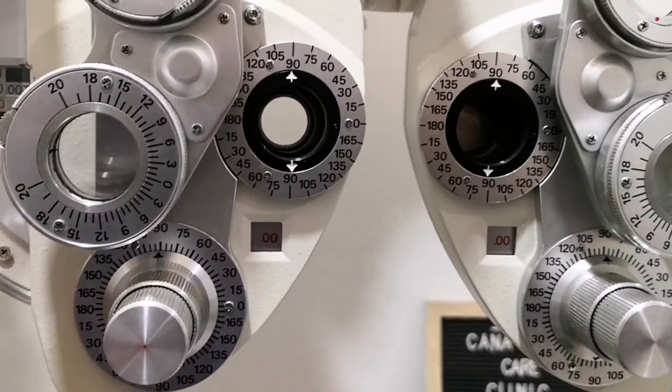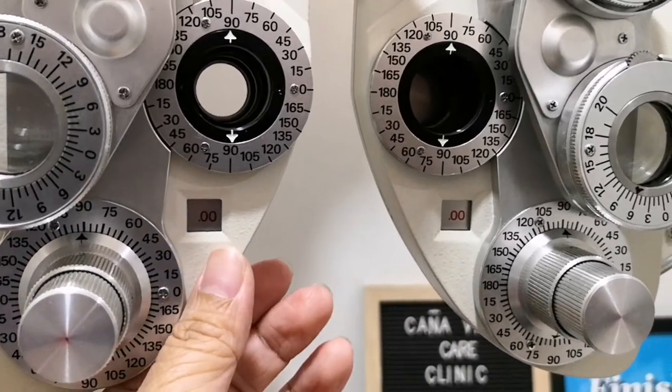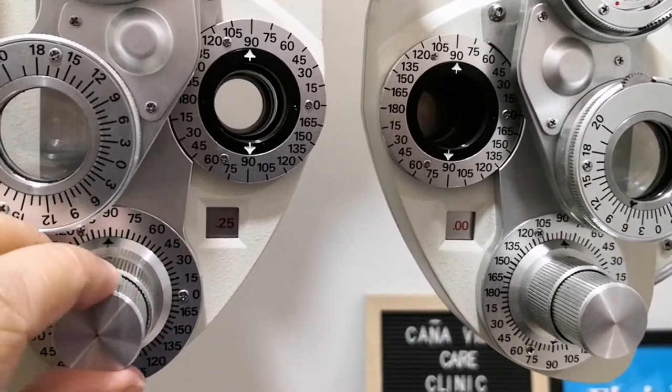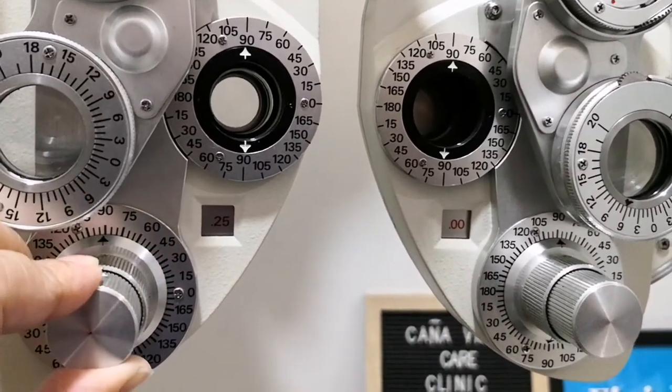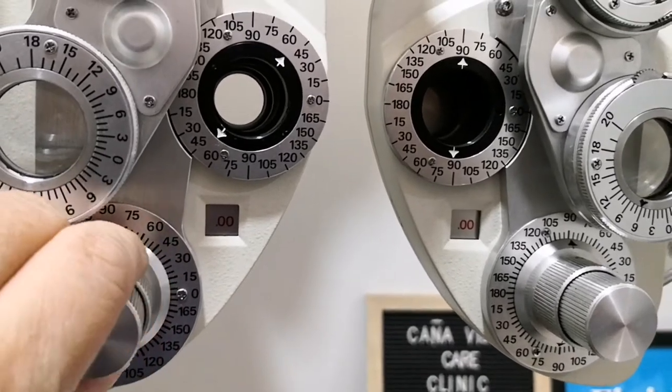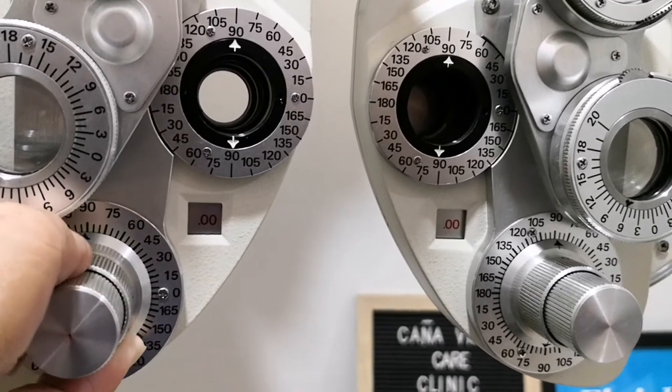And this is the minus plano cylinder control. This is the scale. This is the cylinder power knob, also by 0.25. And this is the cylinder axis knob where we rotate the cylindrical axis.